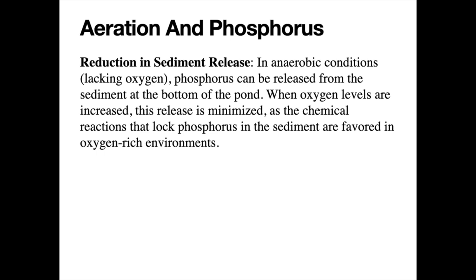Another tool that may be used is called a phosphorus binder or phosphate binder. These are products designed to attach to the phosphorus molecule, encapsulate it, or make it clump together, creating a compound so heavy it's pulled to the very bottom of the pond and sequestered there. Whether through aeration alone or combined with a binder, removing phosphorus from the water column typically helps manage algae issues and moves the pond in a much better direction.